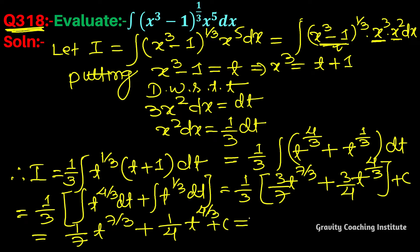Putting back the value of t: = (1/7)(x³-1)^(7/3) + (1/4)(x³-1)^(4/3) + c. This is the answer.